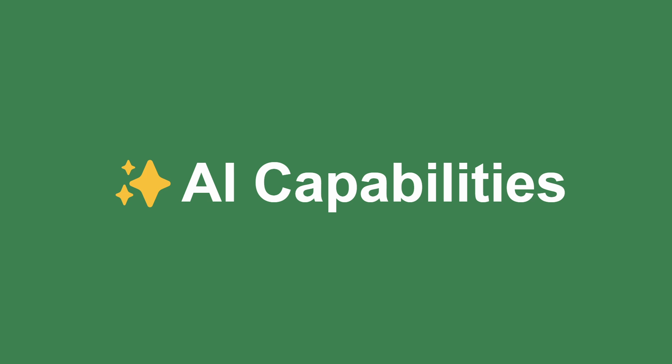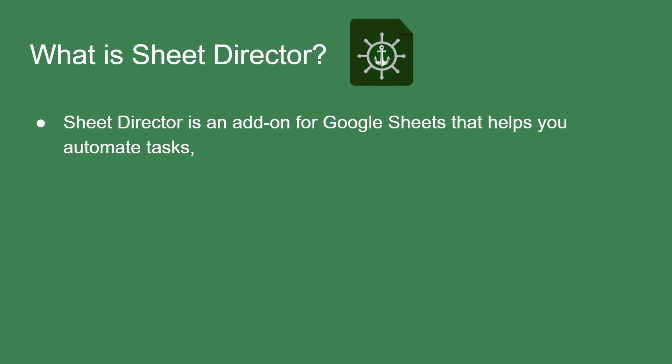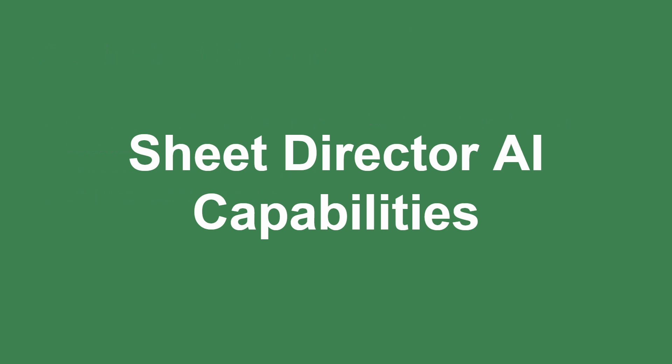Sheet Director's AI Capabilities. Sheet Director is an add-on for Google Sheets that helps you automate tasks, manage data flow, and gain valuable insights from your information. But now, it's gone beyond that with the power of AI.